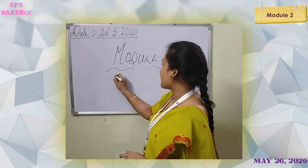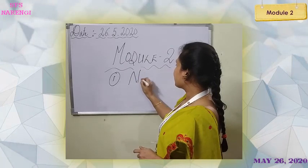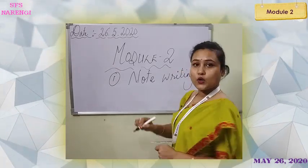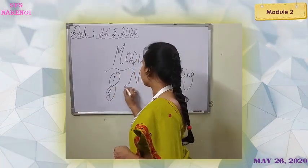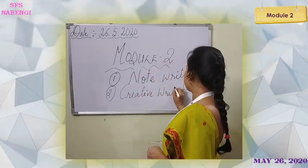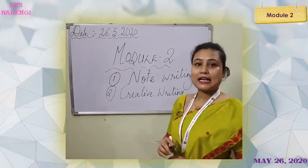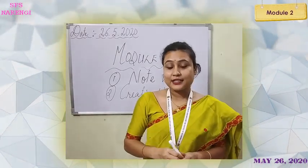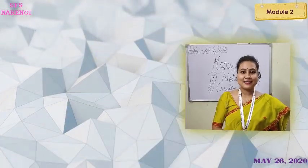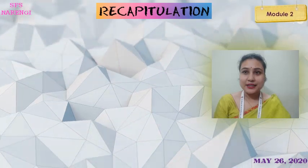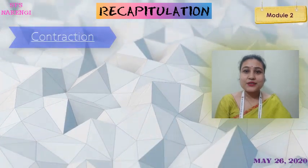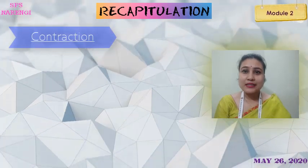Today we will be learning: number one, note writing, and the second one will be creative writing. Before that, we will do a quick recap of what we have done in our last class. In our last class we discussed about contraction. Let's do a quick recap of what is a contraction.